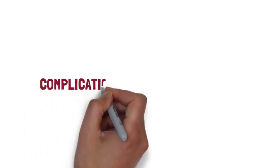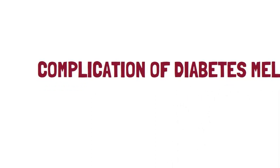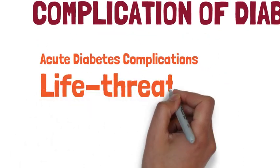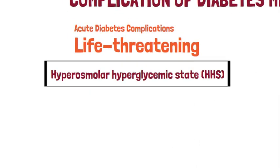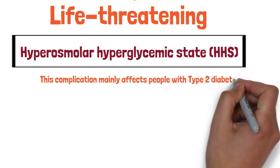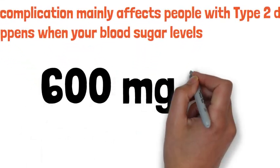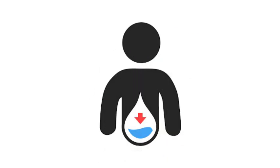In this video we will study about acute and chronic diabetes complications. The first acute diabetic complication is the hyperosmolar hyperglycemic state. This complication mainly affects people with type 2 diabetes. It happens when your blood sugar levels are very high — over 600 milligrams per deciliter — for a long period, leading to severe dehydration and confusion. It requires immediate medical treatment.